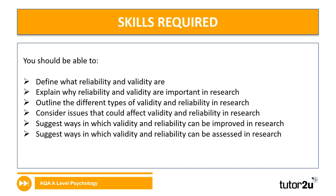The skills required for reliability and validity — there are a number of different layers to this. The most important skill is to know what is actually meant by these terms. Then you've also got to understand why it is important that research should be both reliable and valid, understand that there are different types of validity and reliability, consider issues surrounding validity and reliability in research, and ways of overcoming those issues — how we can improve reliability and validity and then how we can assess whether or not we've got them.